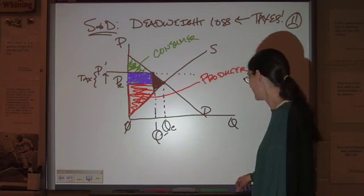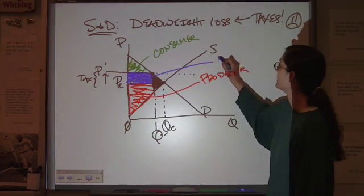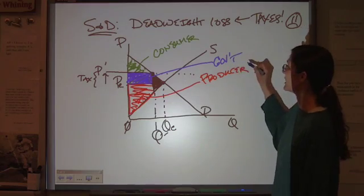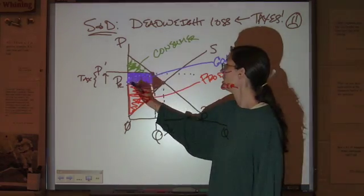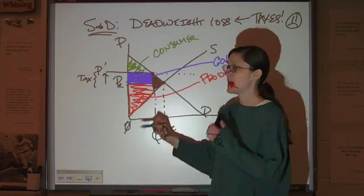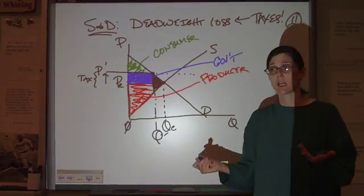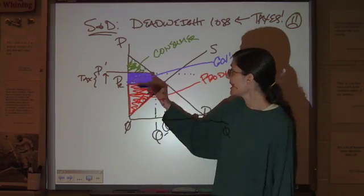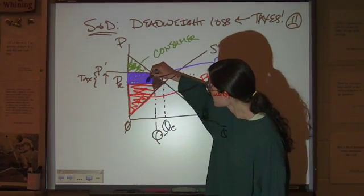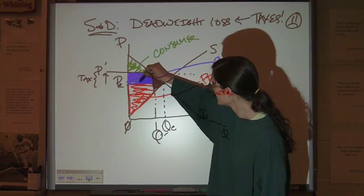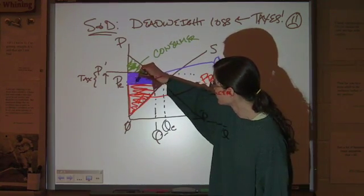So, now we've introduced the idea of a government surplus because they took this amount right here. Now, how could you figure that out quantitatively? Well, you could say the amount of the tax times the quantity sold. And that gives you that neat little rectangle right there.